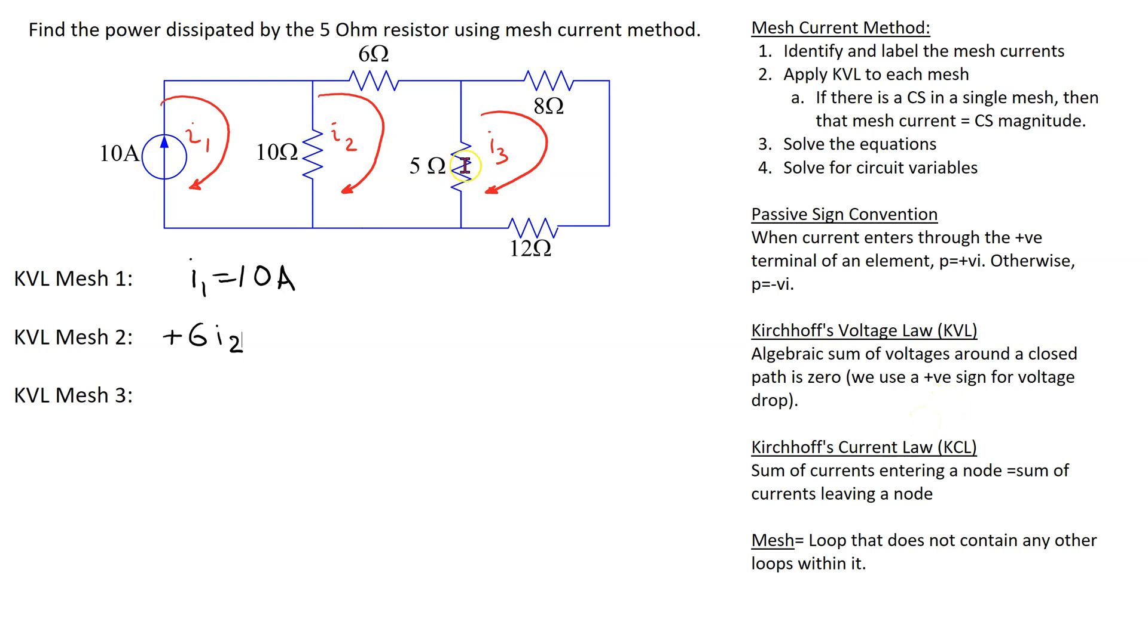Next, we have the 5 ohm resistor. There are two currents I2 and I3 flowing through this resistor. Since we are applying Kirchoff voltage law to mesh 2, we give priority or precedence to the direction of I2.